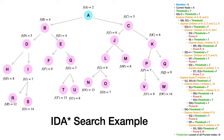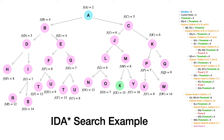Node P with F(P) = 7 equals the threshold, so we pursue it and get children V and W, whose F(n) values are above the threshold. Iteration 5 is complete with pruned nodes H, R, S, F, T, U, N, O, M, V, W, and Q. Among these, M, F, and H have the lowest F(n) values, so that becomes the threshold for the next iteration.